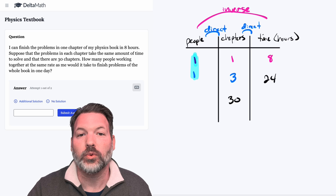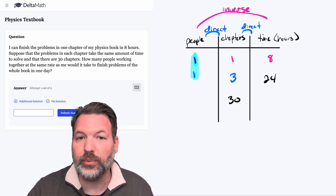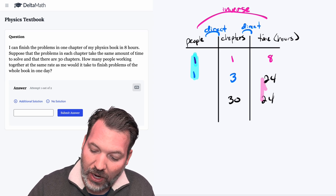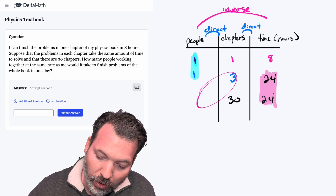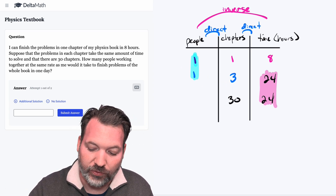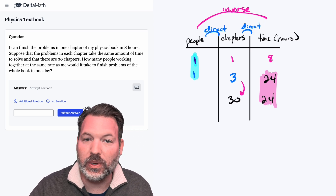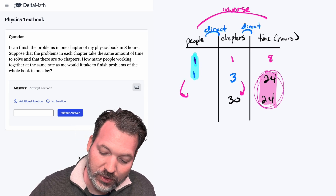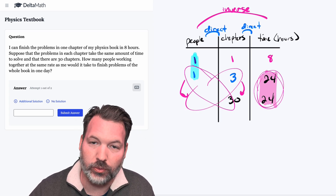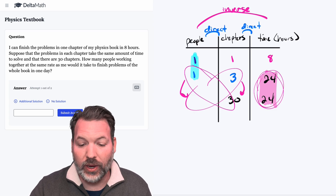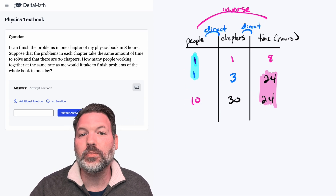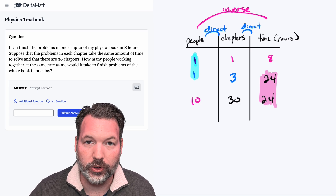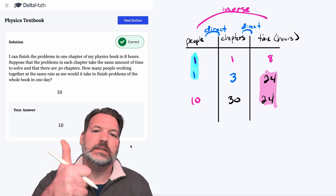We didn't want three chapters — we wanted 30 chapters. So we need to figure out how many people it takes to get those 30 chapters done in 24 hours, holding 24 hours constant. Since people to chapters is direct, we can use cross products: 1 times 30 is 30, which equals 3 times y, so y equals 30 divided by 3, which makes 10. It must be the case that we need 10 people to complete all 30 chapters of the physics textbook in 24 hours. We type that into the system, submit our answer, and yes — we got it correct.